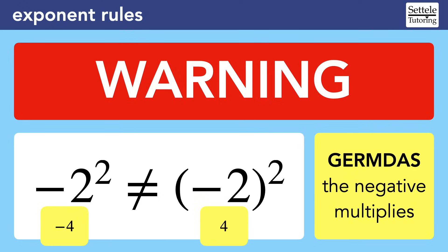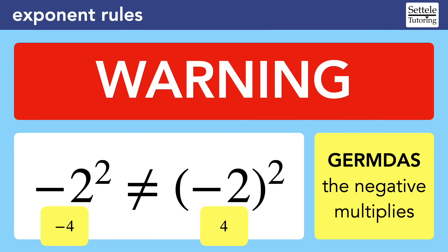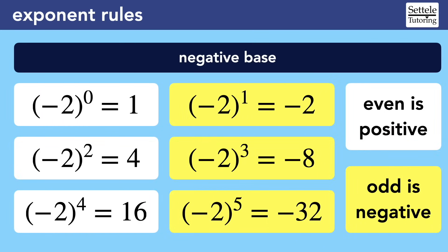The SAT knows about this common mistake, and they could design an entire question to test whether you understand it. When we memorize the rules for negatives and exponents, we can assume that we're thinking about the base in parentheses. In all of these cases, the exponent applies to the entire negative 2. The pattern to memorize is that negative bases raised to even-numbered exponents will have a positive result. You can see this on the left.